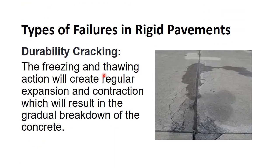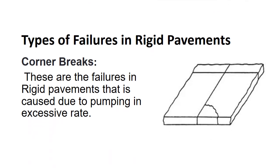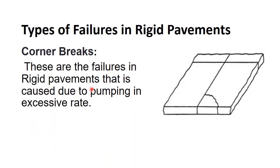Durability cracking results from freezing and thawing action creating regular expansion and contraction, leading to gradual breakdown of concrete. These are series of closely spaced crescent-shaped dark-colored cracks near a joint. The main causes are freeze-thaw expansion of aggregate in the PCC slab, leading to spalling and eventual slab disintegration. The remedy is partial depth or full depth repair of the affected pavement.